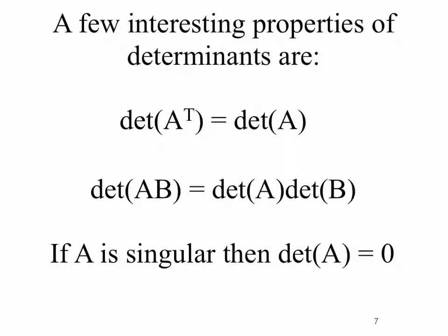A few important properties of determinants: the determinant of A-transpose equals the determinant of A; the determinant of the product AB equals the determinant of A times the determinant of B; and if A is a singular matrix — meaning A does not have an inverse — then the determinant of A equals zero. Conversely, any matrix with determinant not equal to zero is non-singular.